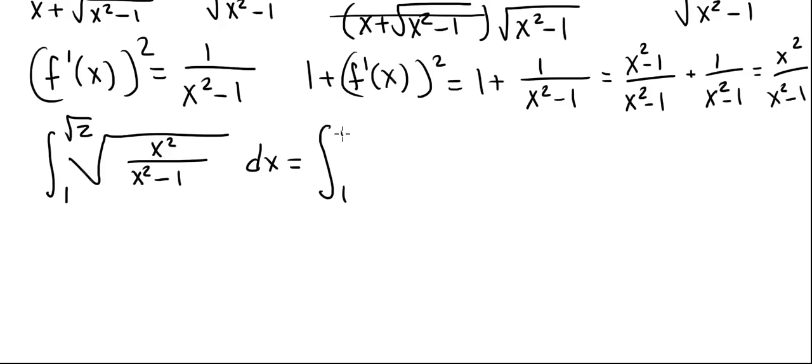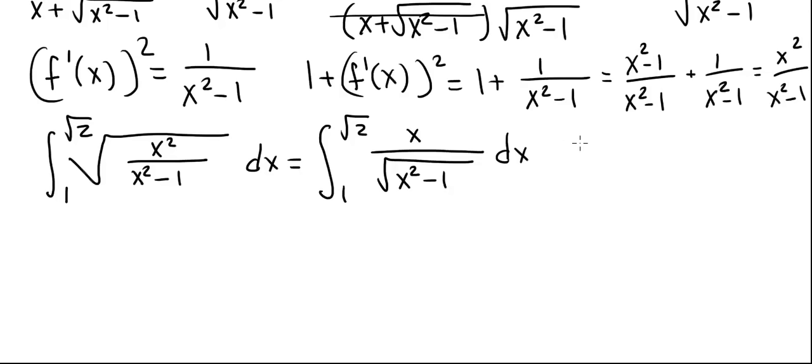The integral is from 1 to square root of 2 of the square root of x squared divided by x squared minus 1, which equals the integral from 1 to square root of 2 of x divided by square root of x squared minus 1. This is what we call an improper integral. We see that x divided by square root of x squared minus 1 is undefined at x equals 1, which is an endpoint of the interval. An improper integral is one where the function is undefined at a point in the interval, or an endpoint is infinity.